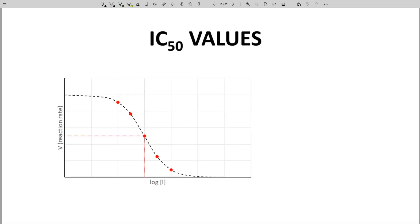Here is a sigmoidal curve from which an IC50 value for a competitive reversible inhibitor can be read. It's an inhibition curve.